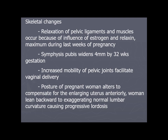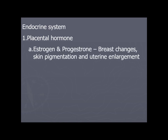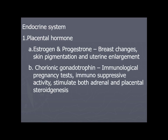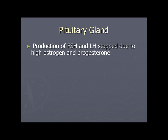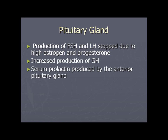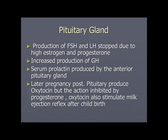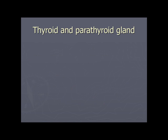Endocrine system: sex hormones (estrogen and progesterone) lead to breast changes, skin pigmentation, and uterine enlargement. Human chorionic gonadotropin has immunological pregnancy test and immunosuppressive activity. Human placental lactogen antagonizes insulin action and stimulates breast growth. Pituitary gland: FSH and LH production stops due to high estrogen and progesterone. Increased production of growth hormone occurs. Prolactin is produced by the anterior pituitary in late pregnancy. Oxytocin is produced but its action is inhibited by progesterone; oxytocin also stimulates the milk ejection reflex.